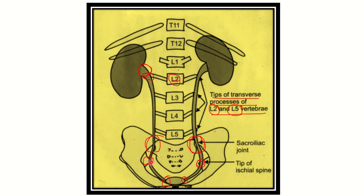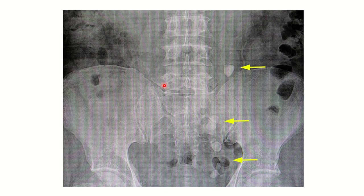Then the ischial spine, then the opening of the urinary bladder. These are the normal landmarks along the pathway of the ureter. Any stone may be lodged or impacted at any of these points, so we must identify this whole pathway when locating a stone in the ureter.